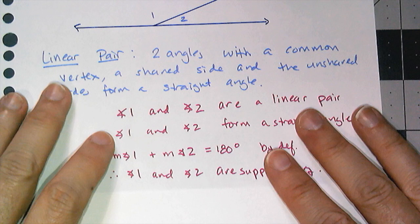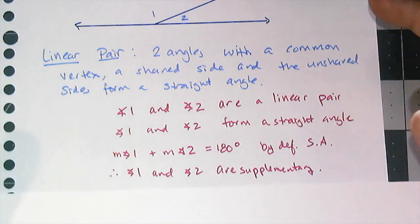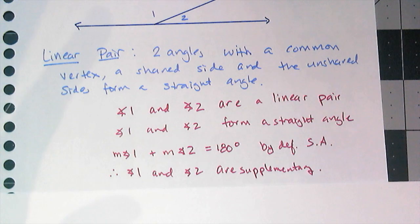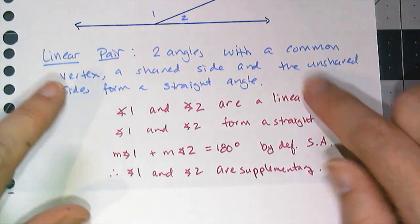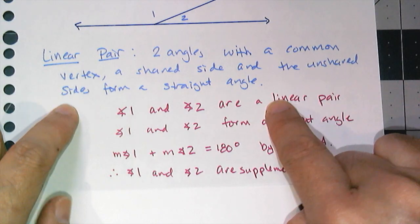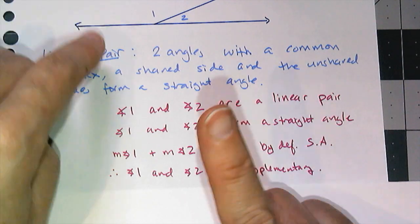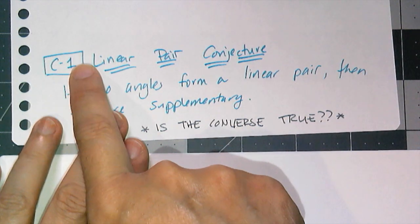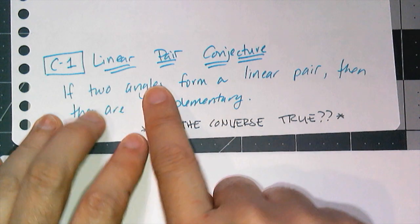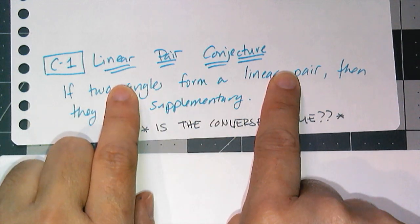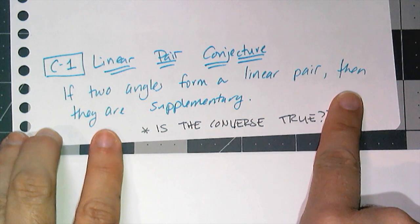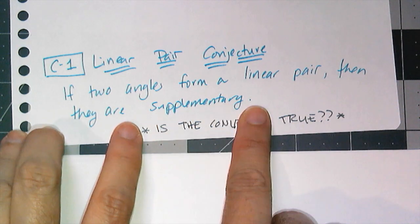When we have observations and we think things are true, it doesn't mean they are — we have to prove them. Since I've just proven this, I'm going to name it conjecture one. C1, the Linear Pair Conjecture, says: if two angles form a linear pair, then they are supplementary. Most of our conjectures will be conditional statements.